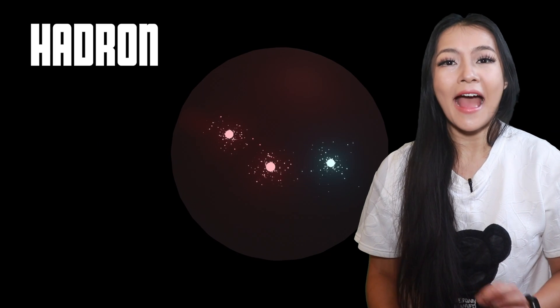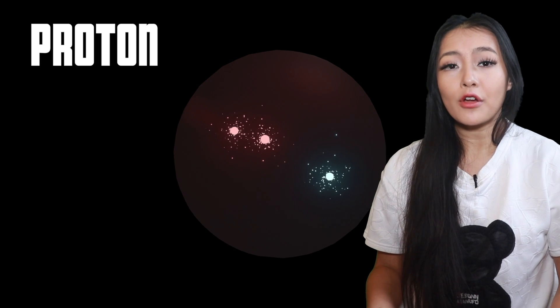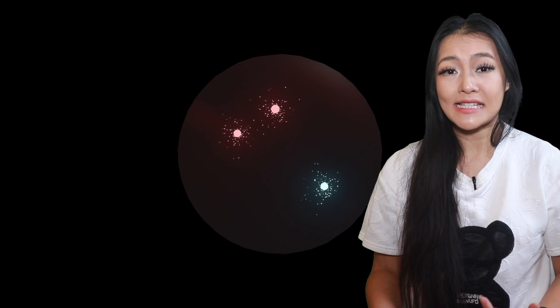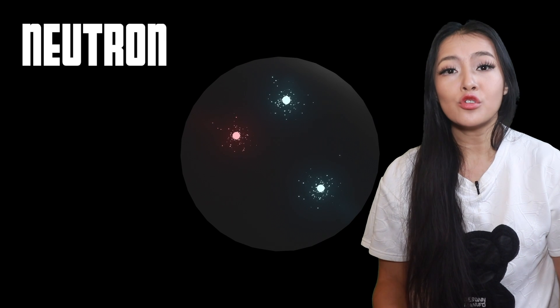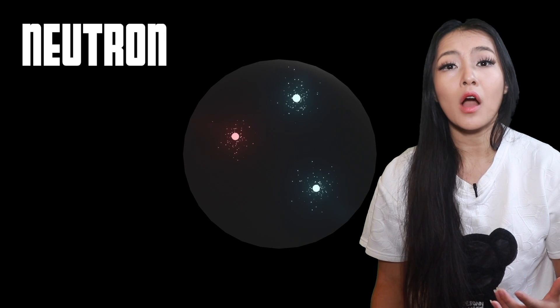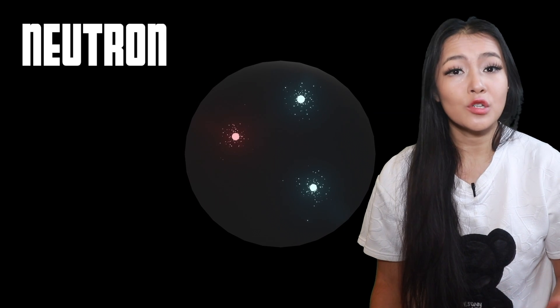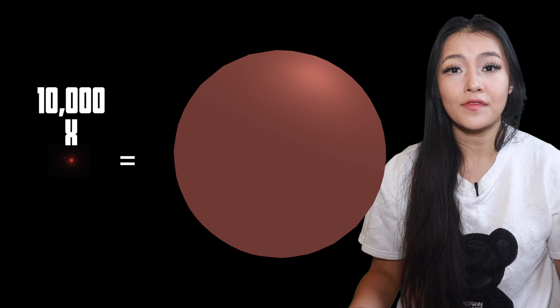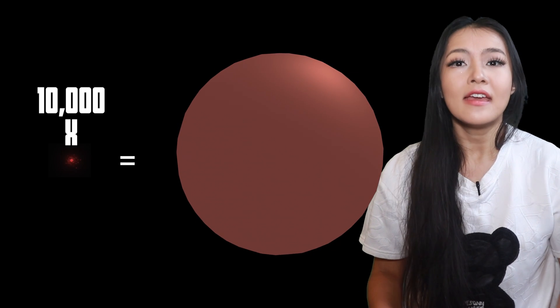Quarks make up hadrons, like the proton, which is made up of two up quarks and a down quark, and the neutron, which is made up of an up quark and two down quarks. Experiments have shown that quarks are no larger than one-ten-thousandth of the size of a proton. This means that hadrons, like protons and neutrons, are mostly empty space.